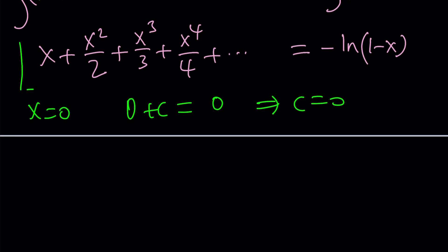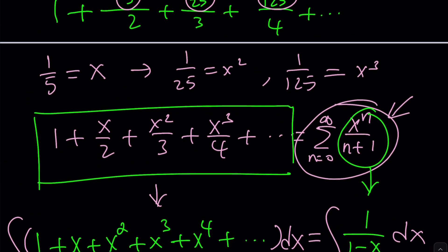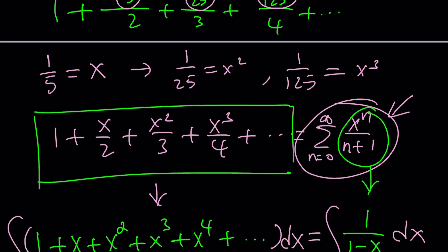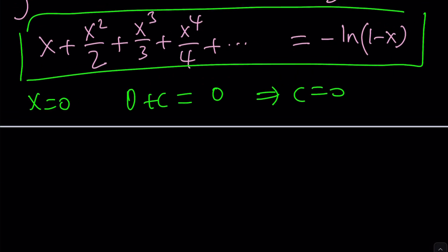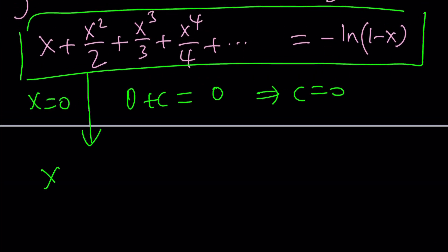But we still need to check. So now, this is my series, but that's not what I'm looking for. I do need my series to start with 1 and then continue with x over 2, x squared over 3. That is easy. Just factor out an x and then you'll get what you want. All your wishes will be granted. Not all of them, but at least some of them.